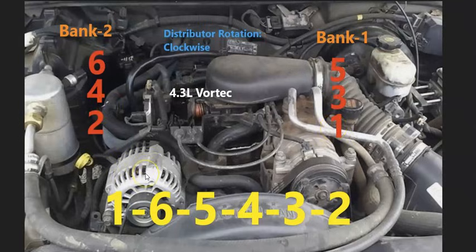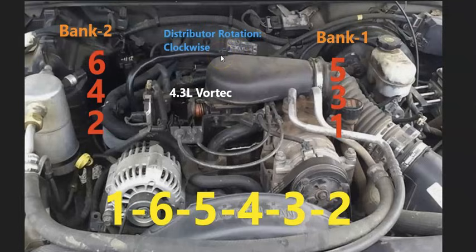The firing order for the 4.3 liter Vortec is going to be 1, 6, 5, 4, 3, 2. If you happen to have a distributor, the rotation is going to be clockwise.